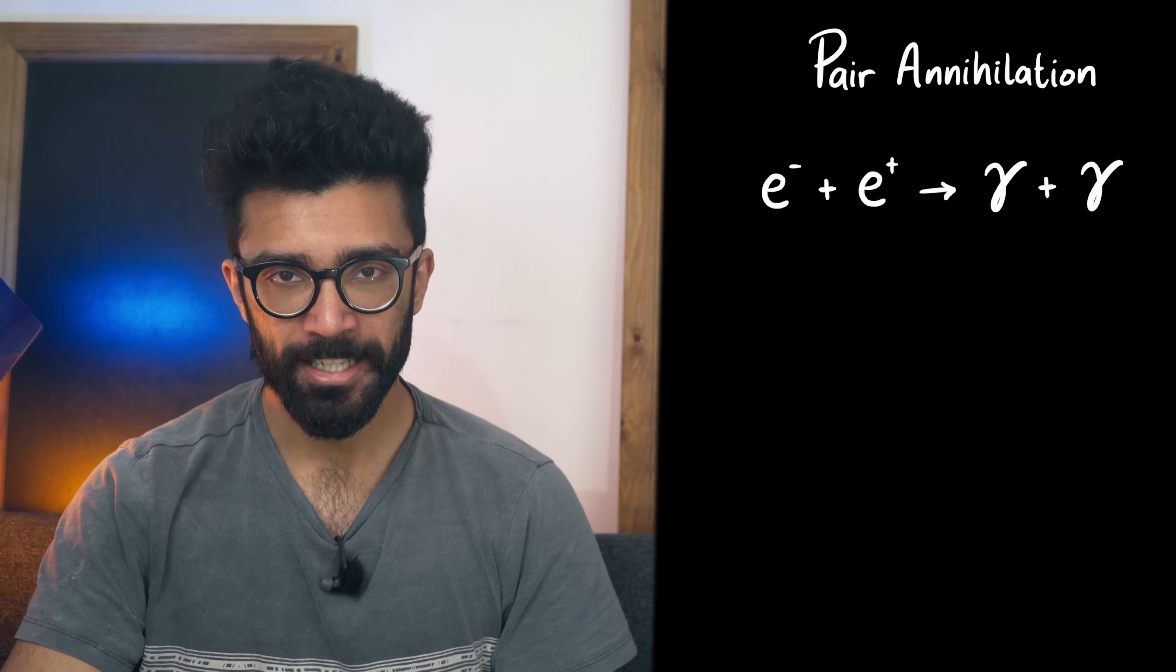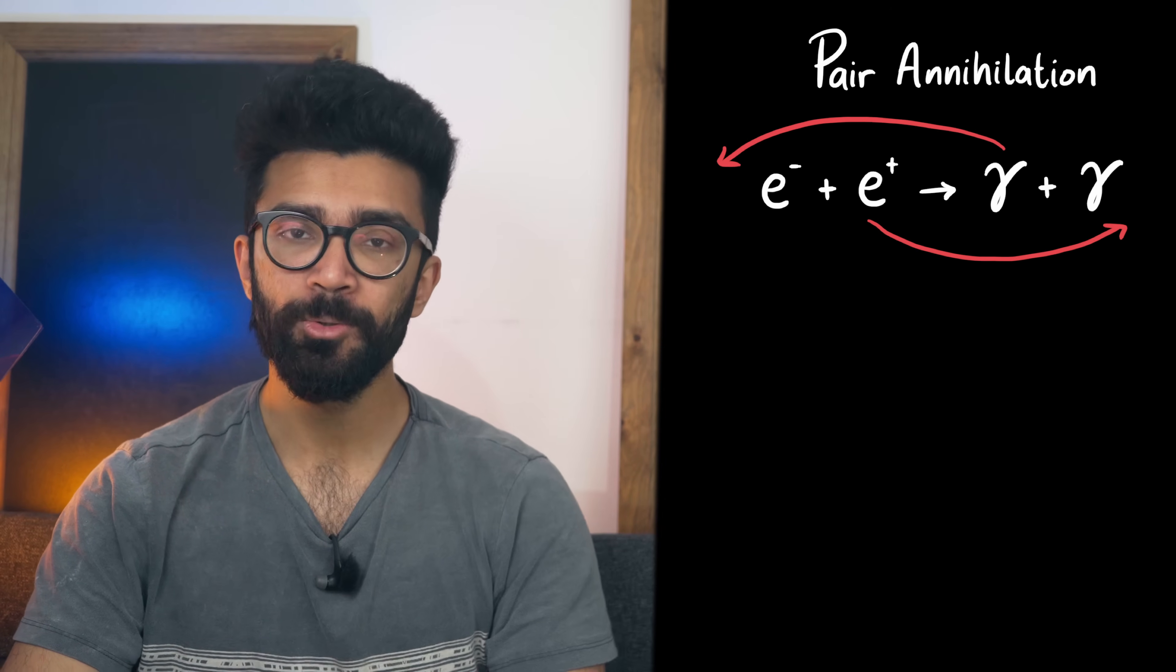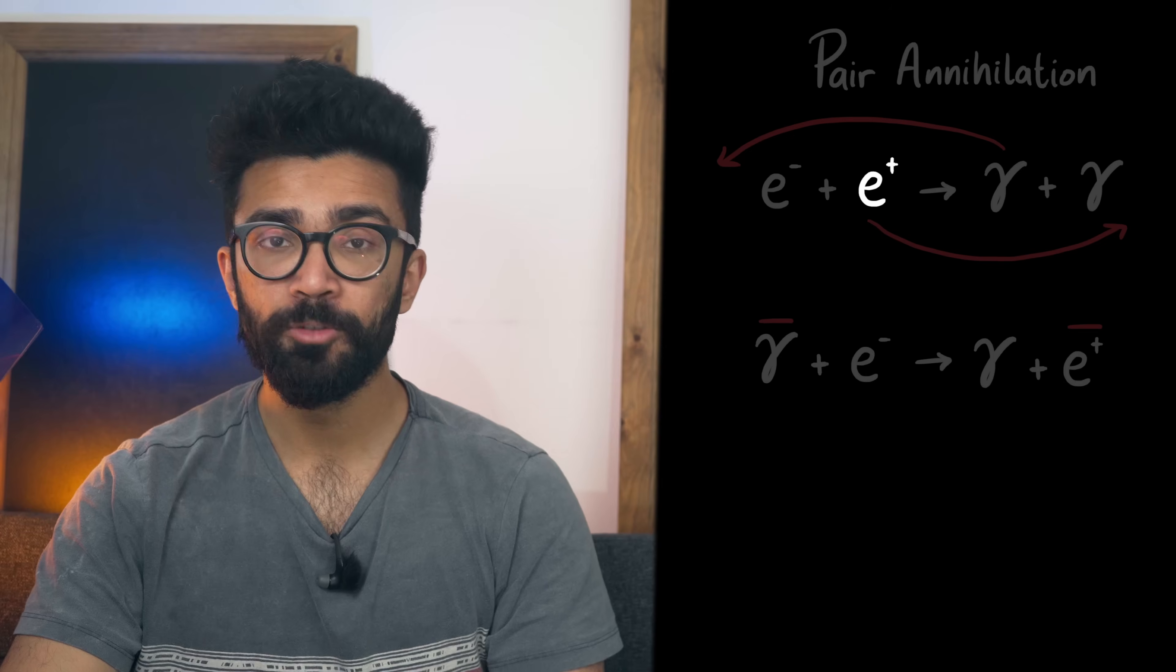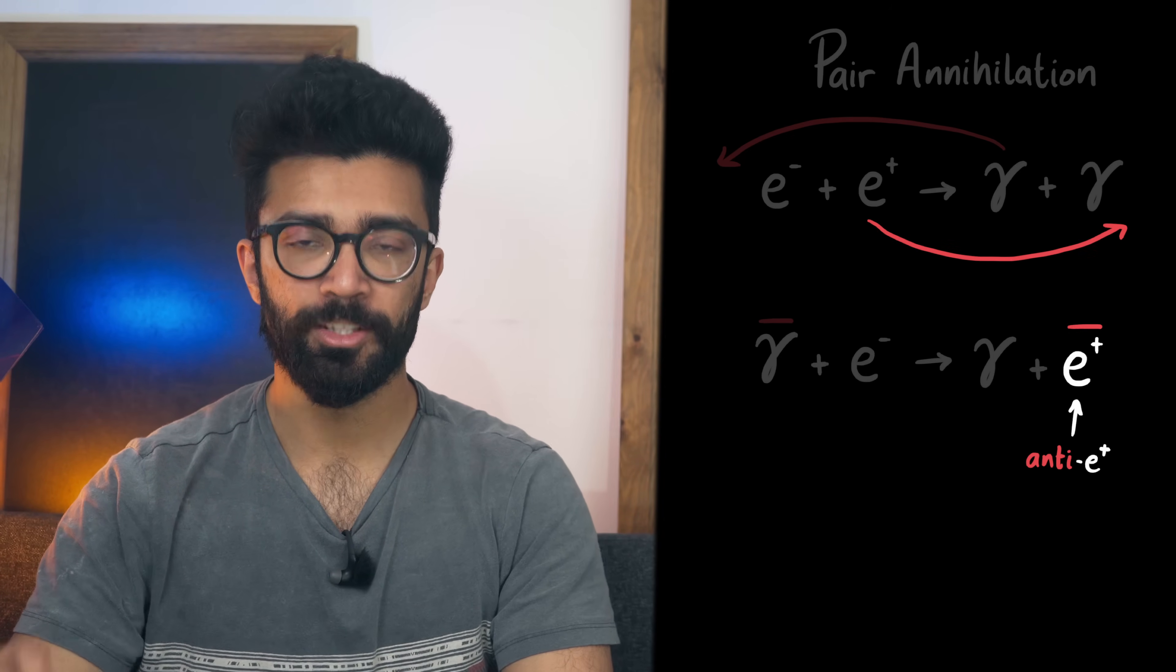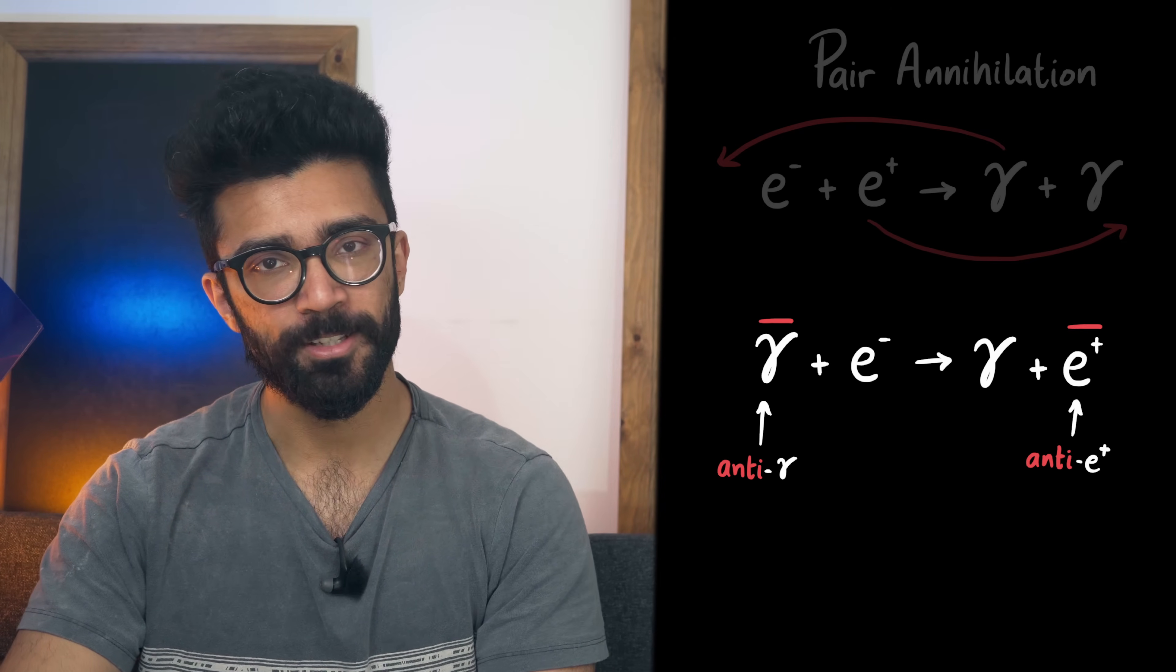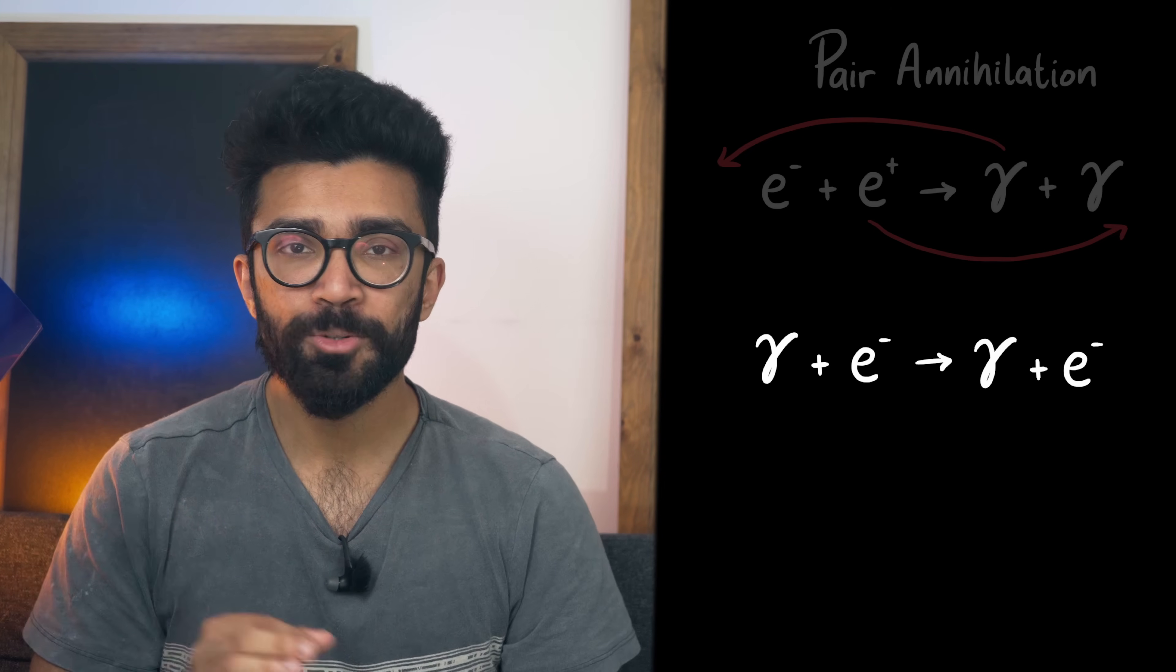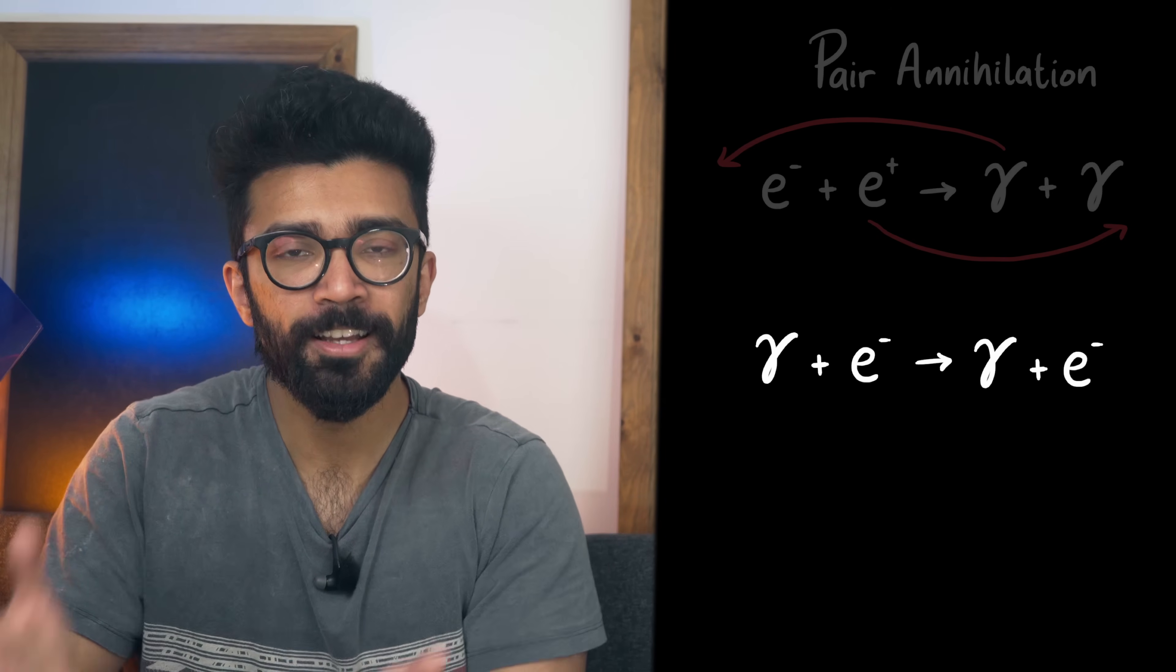We can take any particle and move it to the other side of the equation but if we do that we have to put a bar above it to show we're now talking about its antiparticle. So if we take the positron from here and move it to this side while considering its antiparticle and we then do the same thing with this photon we come up with a new equation that is also allowed by the rules of particle physics. Let's remember that the photon is its own antiparticle and the antiparticle of the positron is the electron at which point we realize that we've come up with another allowed process that we've already seen to exist. It's Compton scattering.